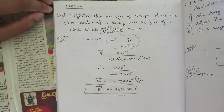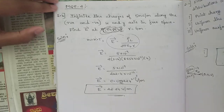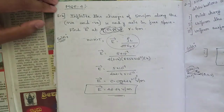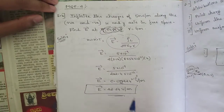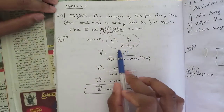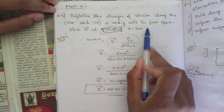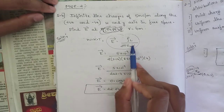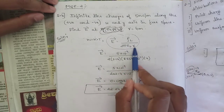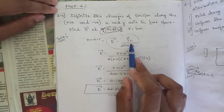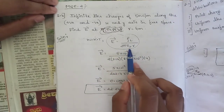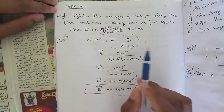We have a direct formula for electric field intensity due to linear charge density. Using that formula: E is equal to ρl divided by 2πε₀r. Since the medium is free space, the permittivity ε is equal to ε₀.